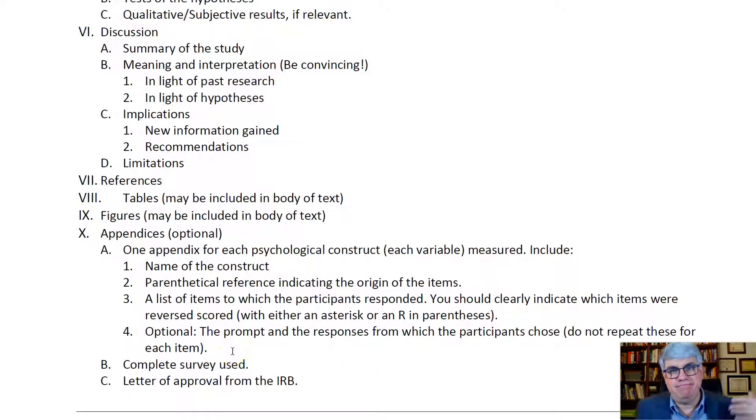You can even include the prompt and the responses from which the participants chose. The next appendix, however, it's good to include the entire survey that you used. If you put it on Google Forms, you could take a screenshot and paste that into the Word document. Same thing with SurveyMonkey or Qualtrics. Put the complete survey in. You can also include the letter of approval from the IRB. Some places require that in the appendices.